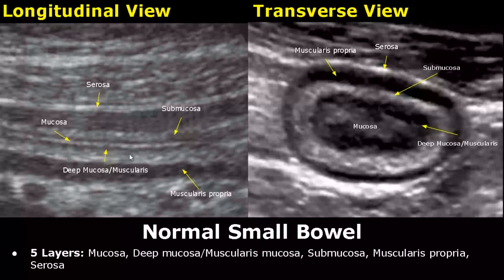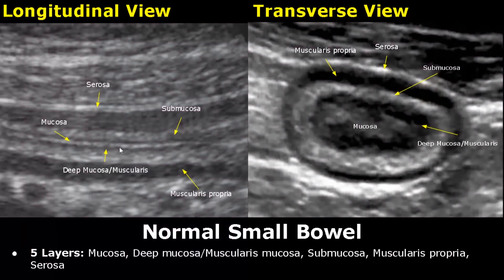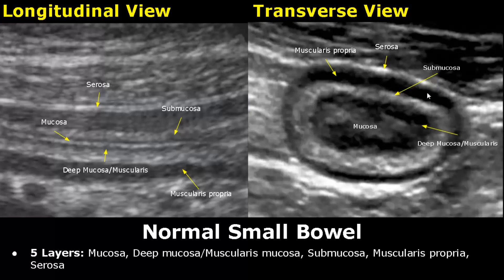The gastrointestinal tract has five distinct layers. The innermost layer is mucosa — it is hyperechoic. The second layer is the deep mucosa or muscularis mucosa — it is hypoechoic. The third, thicker hyperechoic layer is submucosa, and deeper to that is muscularis propria, the fourth layer, which is hypoechoic. And finally, the outermost fifth layer is serosa — it is hyperechoic.